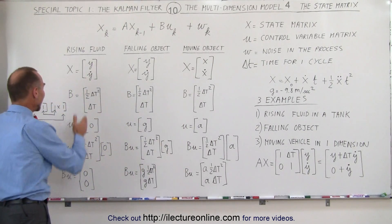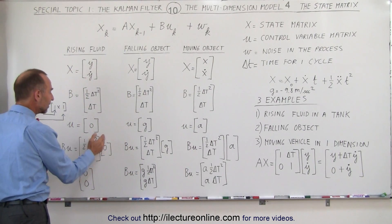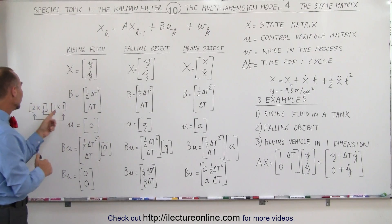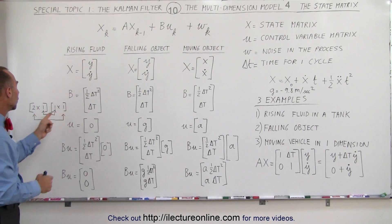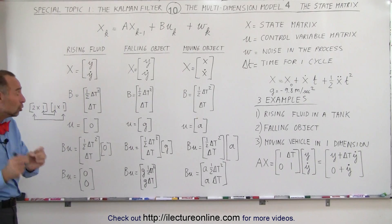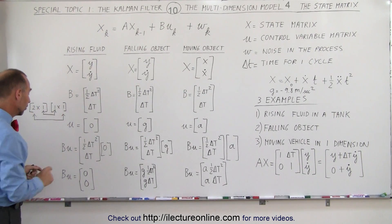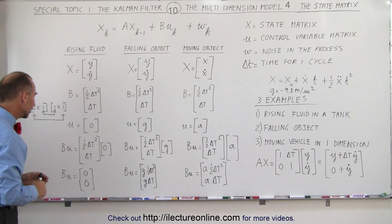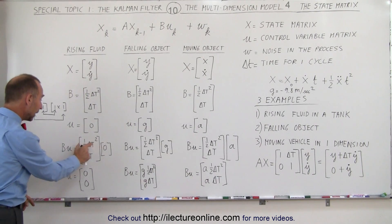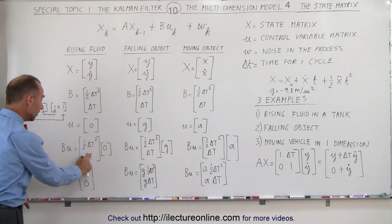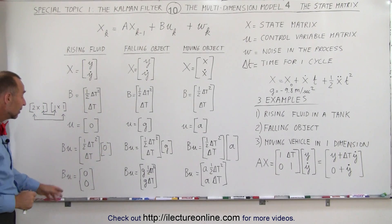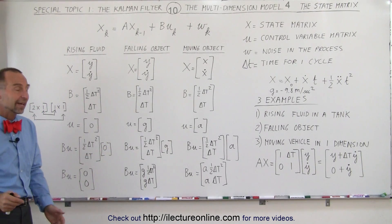Now we're going to multiply a 2 by 1 matrix times a 1 by 1 matrix. Here we can see a 2 by 1 times a 1 by 1. If the two middle numbers are equal, we can indeed do the multiplication and the result will give us a 2 by 1 matrix. In the case of this calculation, we multiply this times 0, we get 0. This times 0, we get 0. B times U is a 0, 0 matrix in this case.